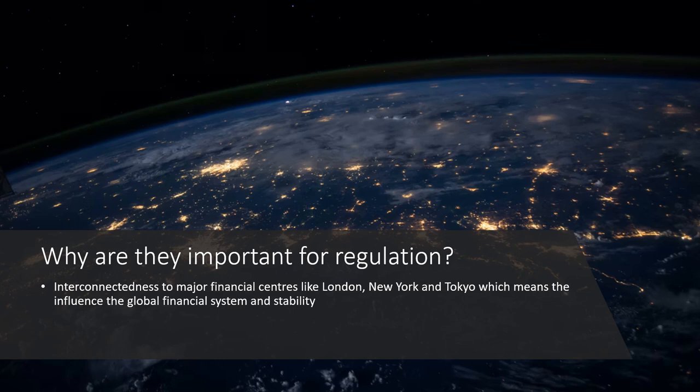Why are offshore financial centres important for regulators? Because of their interconnectedness — these financial centres are very connected to financial centres like London, New York, and Tokyo, which means they influence the global financial system, produce systemic risk, and influence global financial stability.